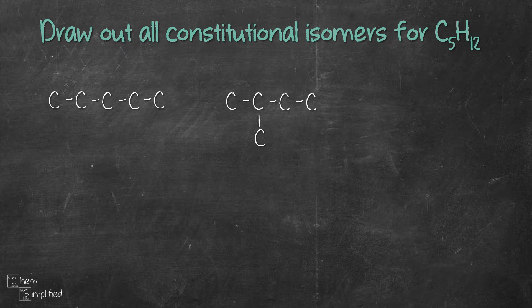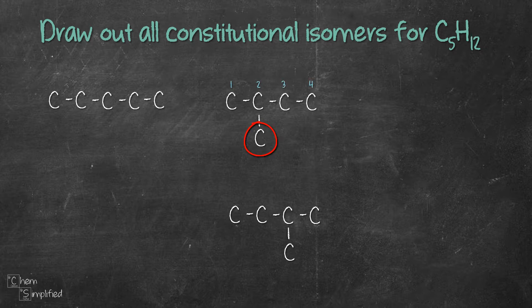Now let's see if I move the substituent to the third carbon, will we get a different isomer? The structure on the top has 4 carbons and it has a substituent on the second carbon.